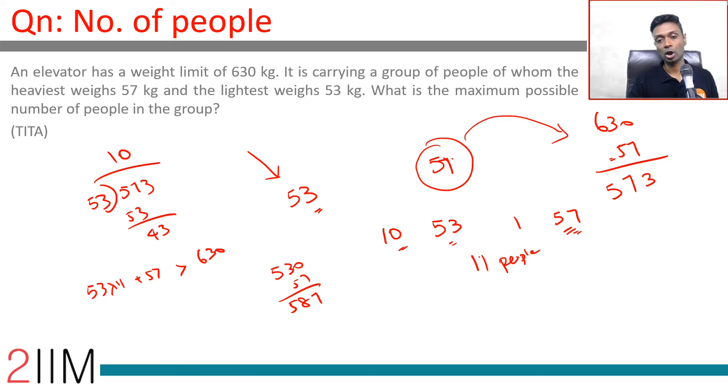53 times 10 equals 530, plus 57 takes us to 587. We have another 43 to get to 630. Assorted different combinations can take us to 630, but what is the maximum number of people in the group?